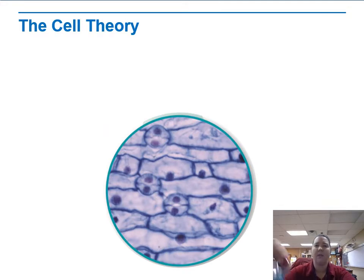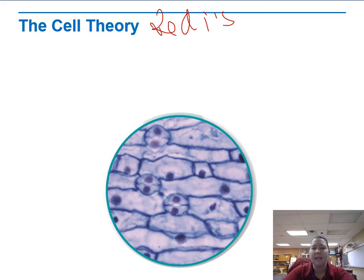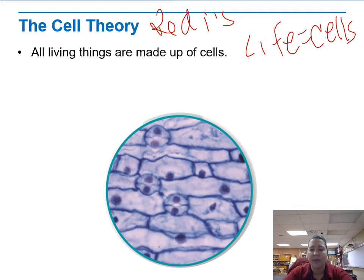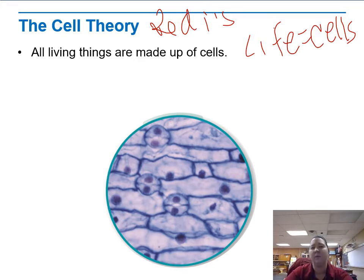The cell theory goes along with Redi's experiment — the fact that cells can't just come from nothing. They have to come from something. So all living things are made up of cells. Life needs cells; without cells, life doesn't happen. Those macromolecules — carbohydrates, lipids, proteins, nucleic acids — come together to make cells and are working parts of cells. But cells need to be whole in order to be alive.